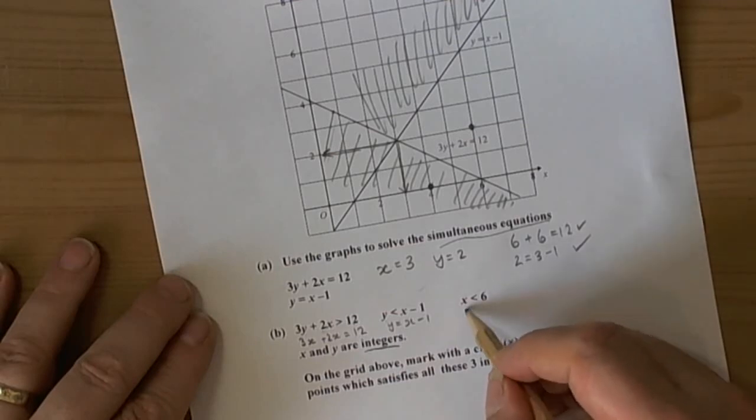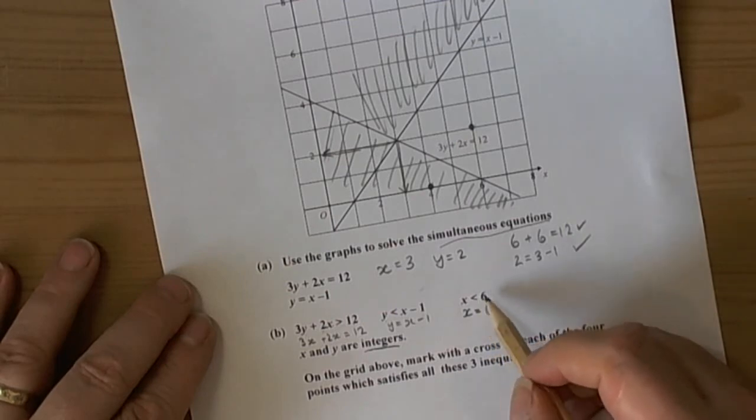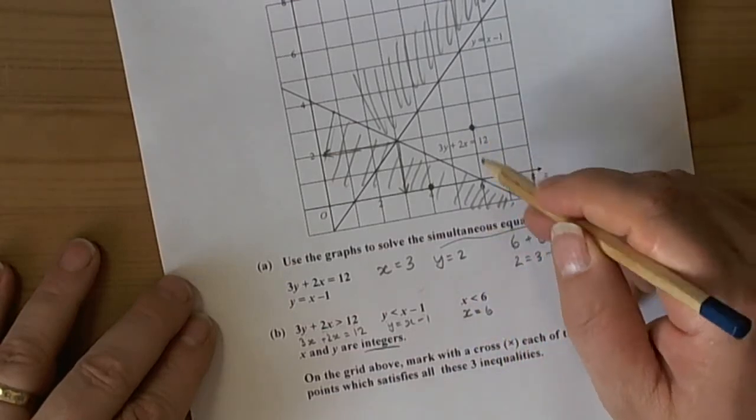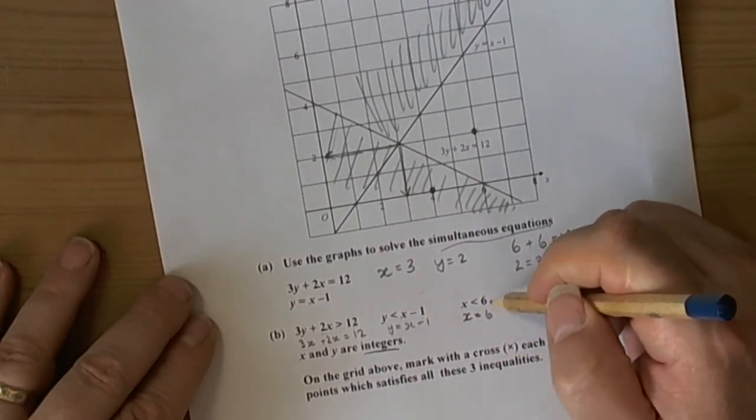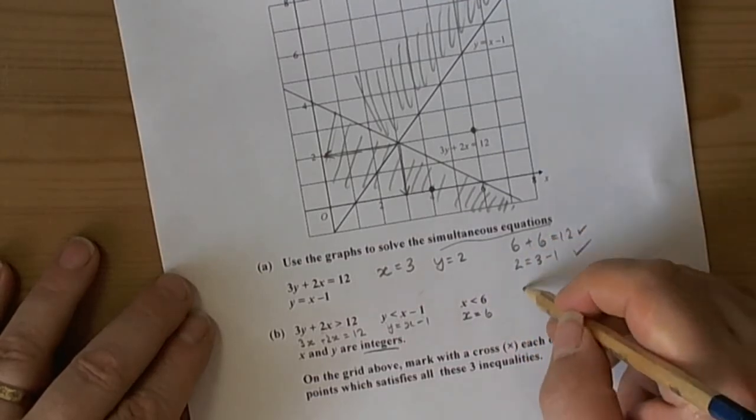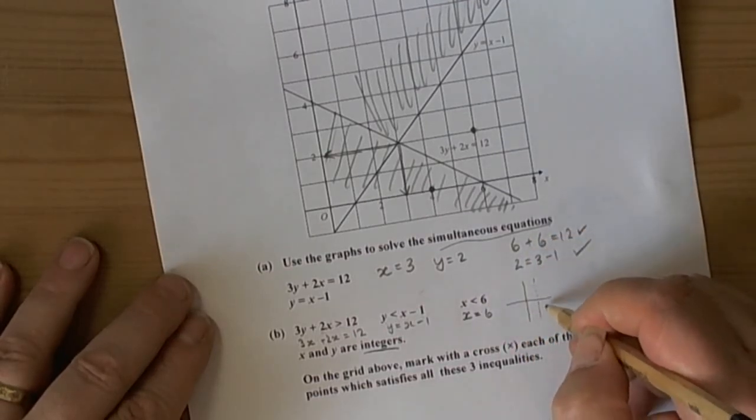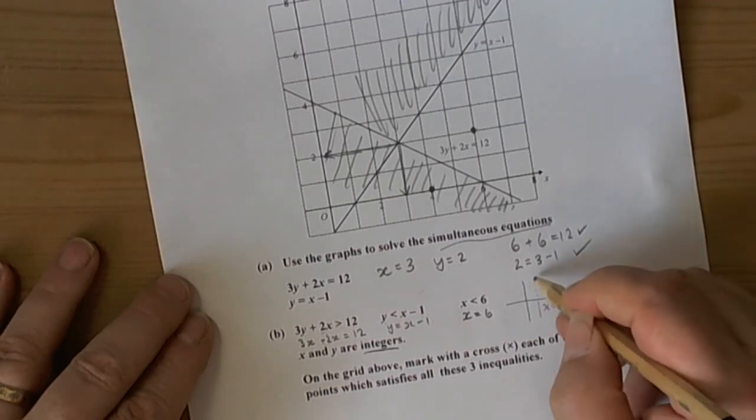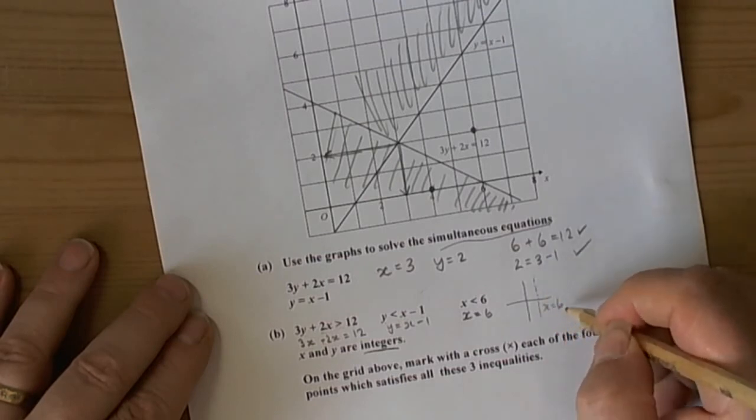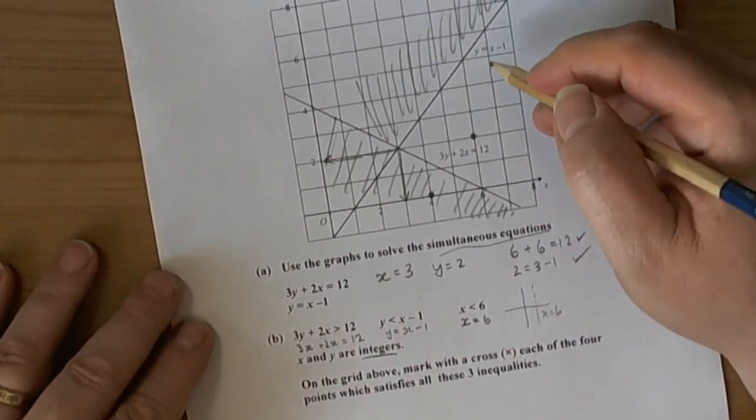The third condition has boundary line x equals 6. Ideally, because these are all less than inequalities, the boundary lines should be dotted to show that answers on the lines are not valid. But we'll use solid lines for easier drawing, recognizing we can't have answers on the line itself. All x lines are vertical because all the x coordinates are the same number.